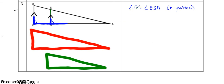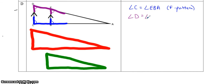If you want to stay consistent, you could have used three letters for C — then to get the order right you'd use DCA. But since C only has one possible angle, you can just use one letter. Another angle that's equal is D and this angle here, again because of the F pattern. So angle D is equal to angle BEA, and that's because of the F pattern.